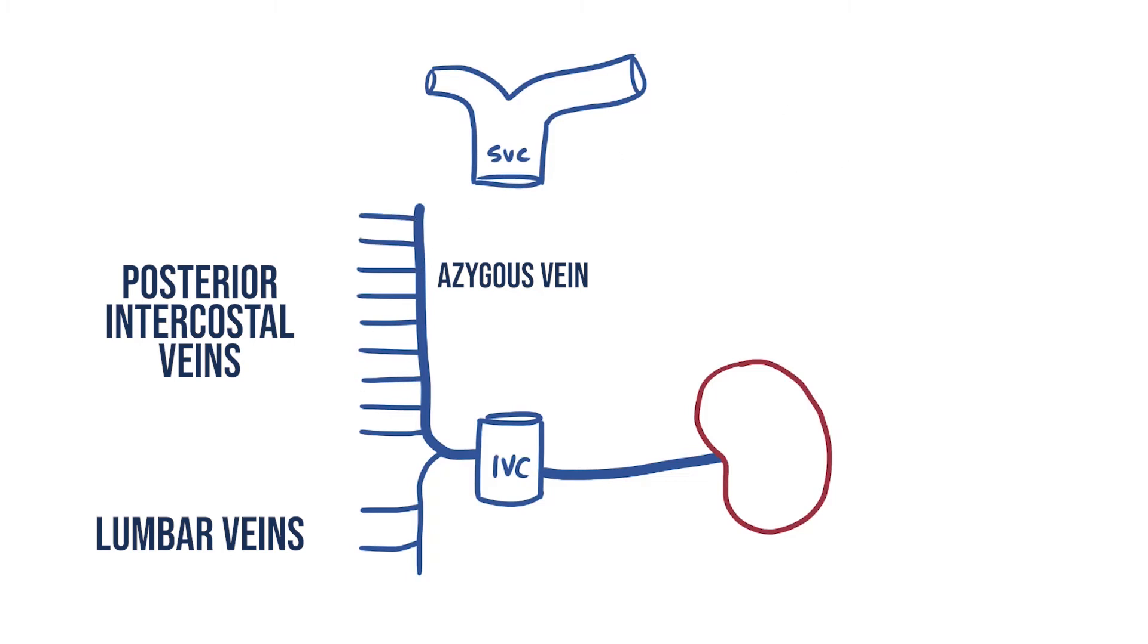It then terminates at T4 by arching over the root of the right lung and emptying into the superior vena cava.